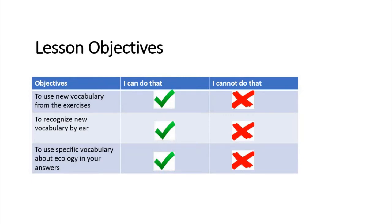Lesson objectives: to use new vocabulary from the exercises — в первую очередь по окончании урока мы должны уметь использовать новые слова из упражнений. Second: to recognize new vocabulary by ear — узнавать новую лексику на слух. И забегая вперед скажу что сегодняшний урок это почти полностью урок аудирования, то есть мы сегодня будем много слушать и воспринимать информацию на слух.